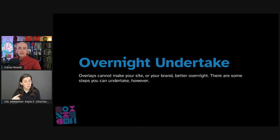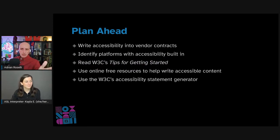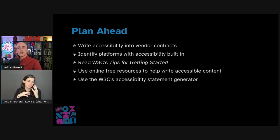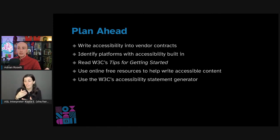As we have seen, overlays cannot make your site or your brand better overnight. To wrap up this talk, I want to cover some steps you can undertake without overlays. Plan ahead. Hire a consultant who has some experience in this space. They can help you choose a vendor who prioritizes accessibility and write this into your contracts. They can also direct you to technologies that have been vetted. Some platforms have accessible features already. WordPress offers 114 free accessibility-ready themes built with a baseline of compliance already in place, and there are also free online resources.